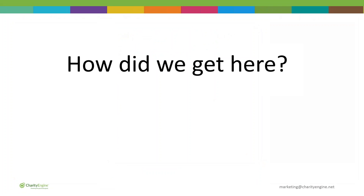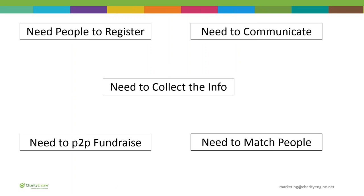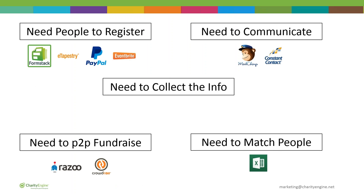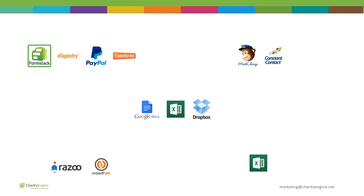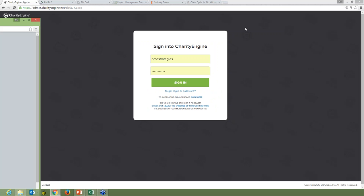How did they make this the largest gathering? Passion — the same passion you bring to your nonprofit job every day. Coordination — it was very challenging to coordinate all these different people volunteering in their spare time, yet it was done because of smart technology choices. They made the key decision not to create data silos — they wanted everything in one place. All the things they needed — people to register, communicate, collect info, P2P fundraise, match people — had they gone with separate solutions for each, it would have been a mess entirely hard to manage. We're going to take our tour through the impact of being silo-free by looking at the software that ran it all.